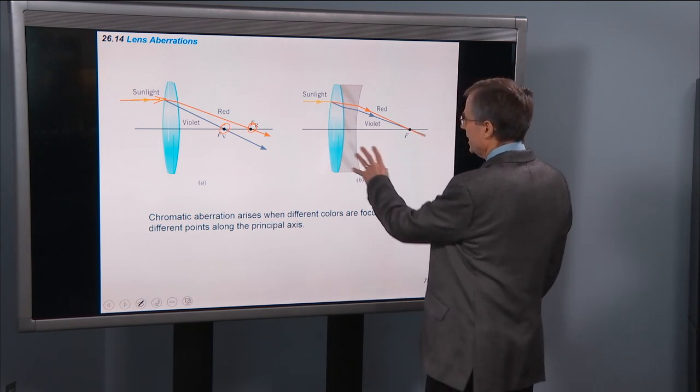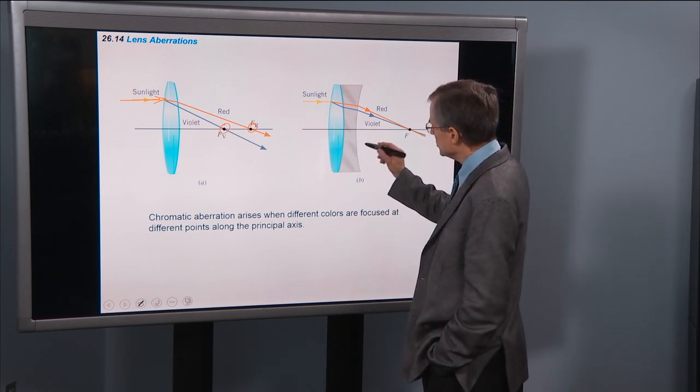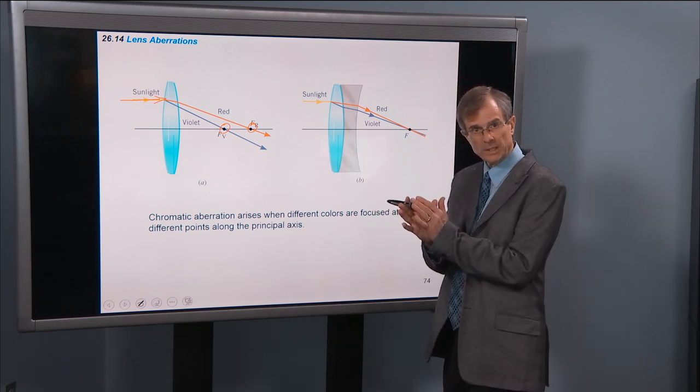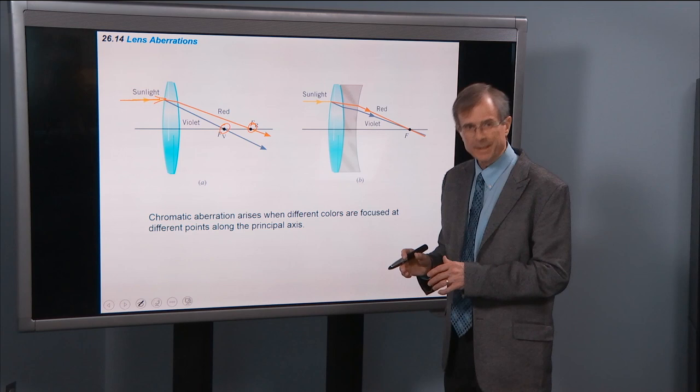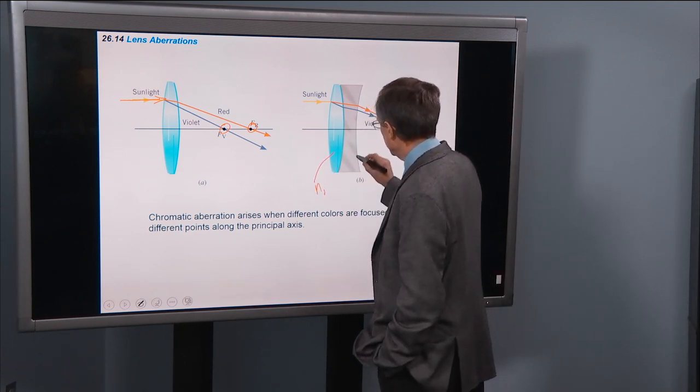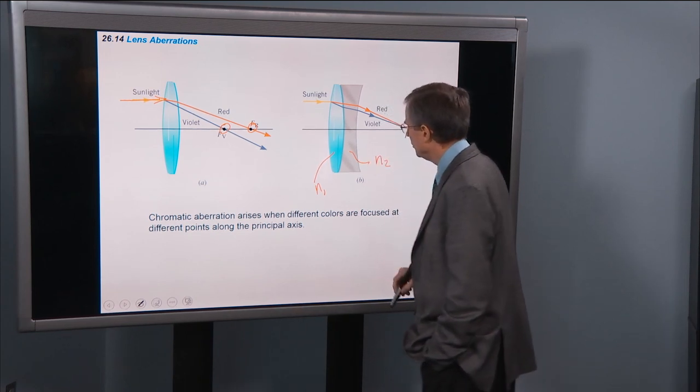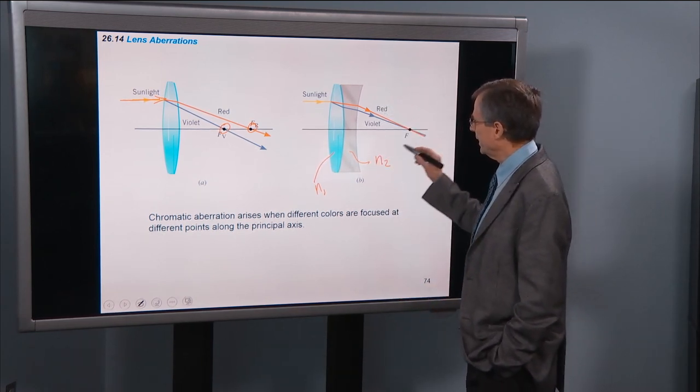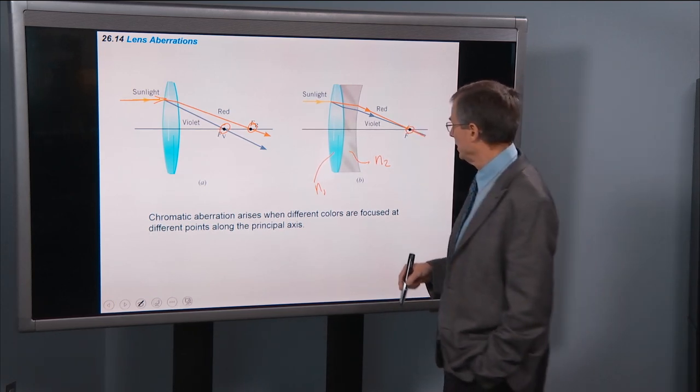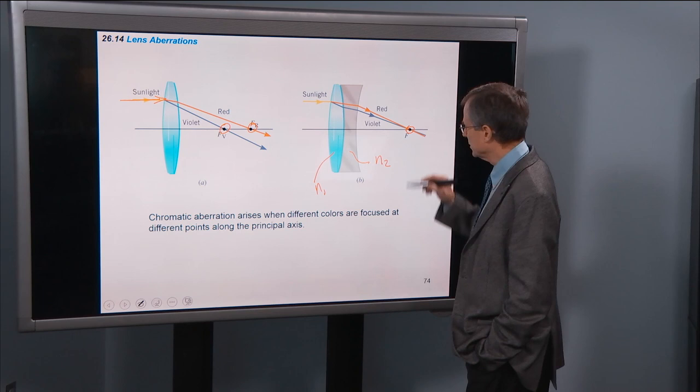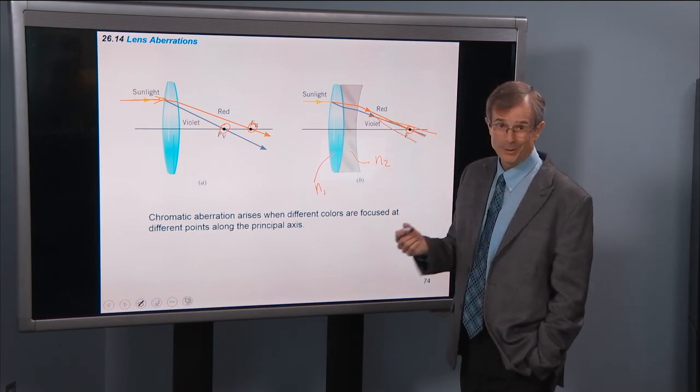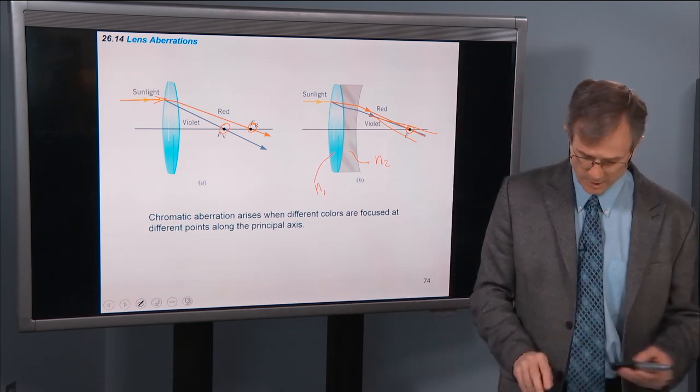And one way around that is to use lenses that have two different pieces that are glued together. Achromatic lenses is what they're called. With an index of refraction N1 here, index of refraction N2 here. So that you can trick those light rays to focus at a single point. But it's never a perfect thing, because if you get red and violet to focus at a particular point, then green might be a little bit off. Or orange or yellow might be a little bit off. But it's a good starting point.